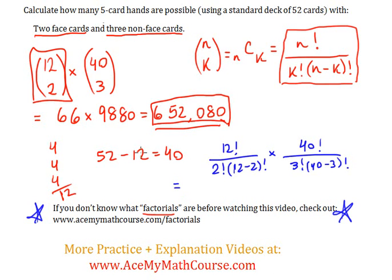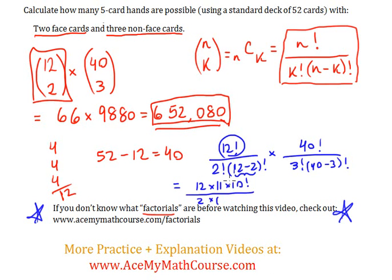I'll simplify this a little bit. We don't have to go much further, because you could plug the rest into the calculator. I can rewrite the 12 factorial as 12 times 11 times 10 factorial, all over 2 factorial — which is just 2, because it's 2 times 1 — times 10 factorial, which I'm going to cancel with the top 10 factorial. So we end up with 12 times 11 over 2, and that's why we get 66.